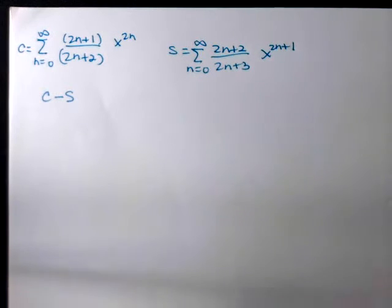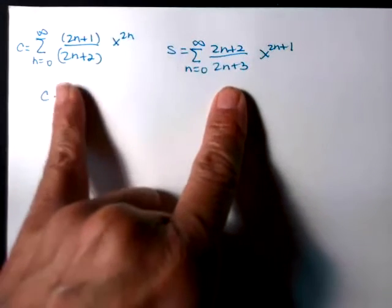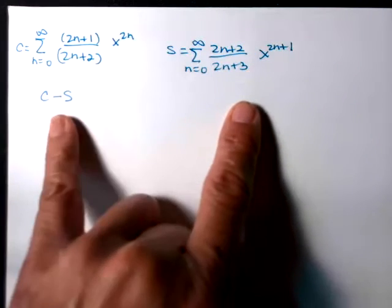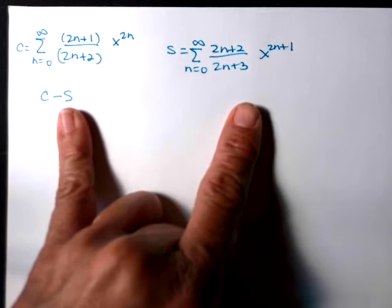So for this question, you're given two series, C of x and S of x, and you're asked to find a new series that's a combination, so a subtraction of C minus S.